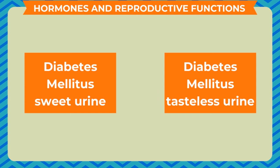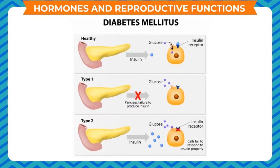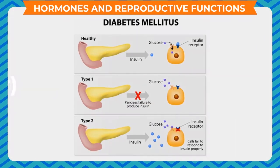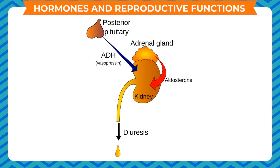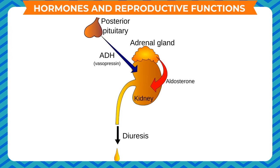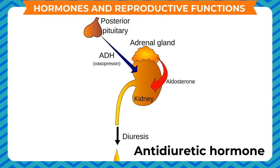Diabetes mellitus (sweet urine) is due to deficiency of insulin, causing glucose or sugar to appear in the urine. In diabetes insipidus (tasteless urine), less water is retained by the body, hence more water is given out with the urine, making the urine dilute. In diabetes mellitus, the level of sugar rises in the blood.